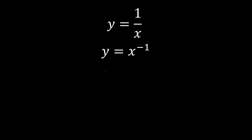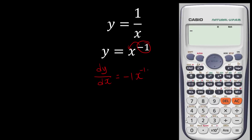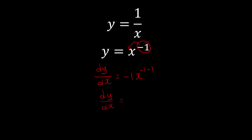Once we have this form, we can carry out the power rule. dy over dx: negative 1 goes in front, so we have negative 1 times x, but don't forget, itself is going to be minus 1 as well. So the dy over dx of this reciprocal function is going to be negative 1 times x to the power of negative 2. Since negative 2 looks a little ugly, I'm going to bring it back down, so it becomes negative 1 over x squared.